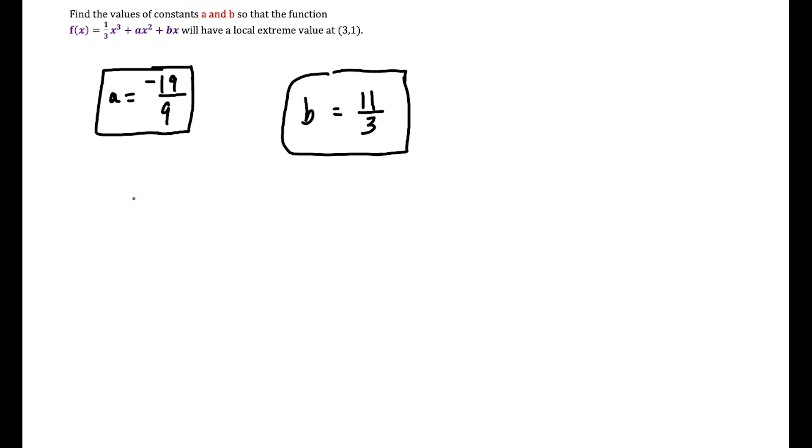Now one thing we could do to investigate this question a bit more and check our answer is we could plug in the values of a and b into the original function. So we have 1/3 x³ + ax², and a is -19/9, so we have -19/9 x², and b is 11/3, so we have + 11/3 x.